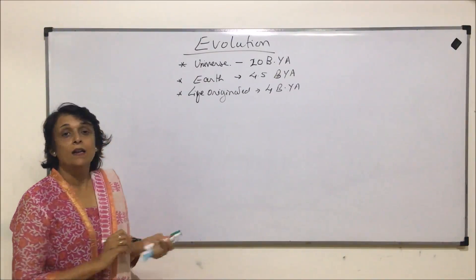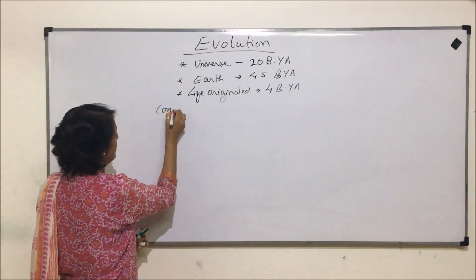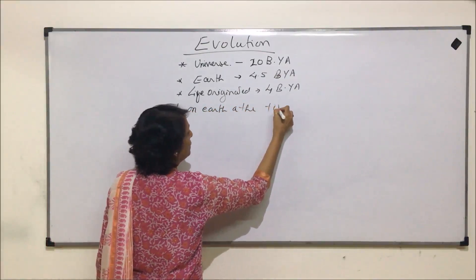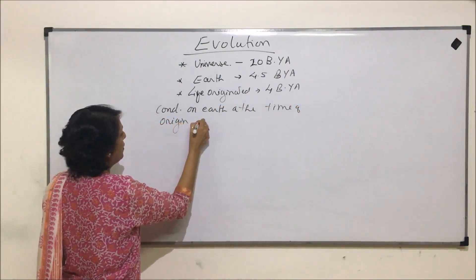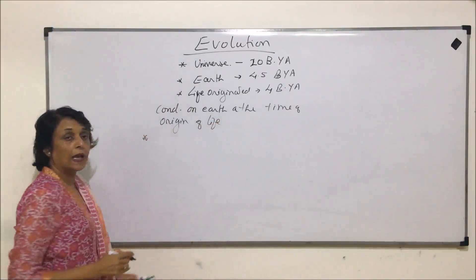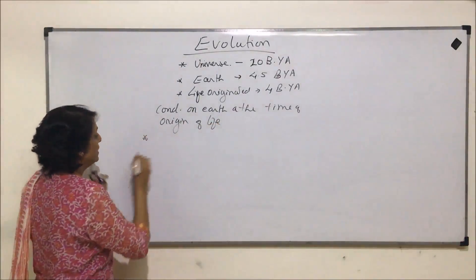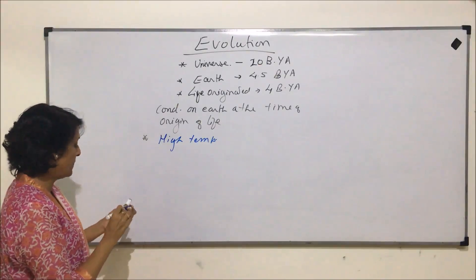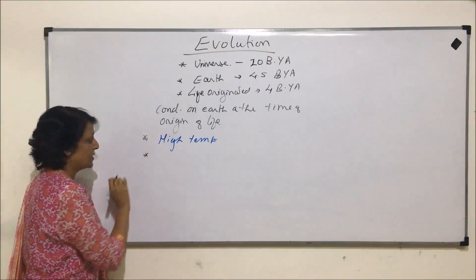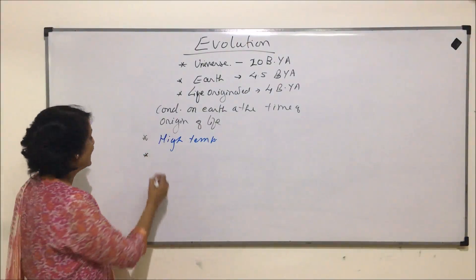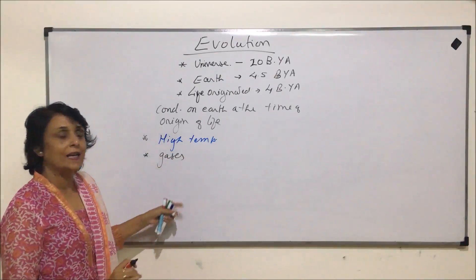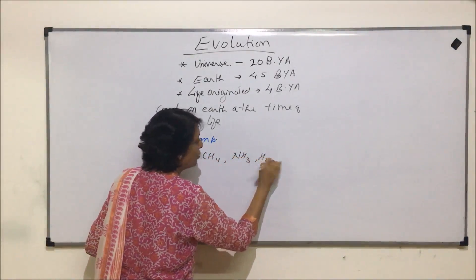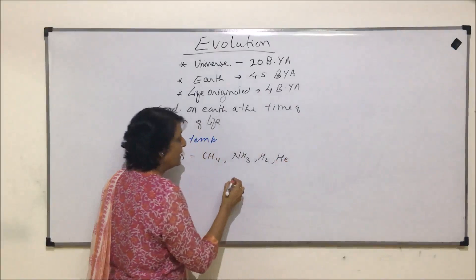Various techniques were used by scientists like carbon dating and many more advanced techniques to estimate this time. Now when life originated on earth, what were the conditions? First thing, the temperature was very high. The lighter elements were present in the form of gases, so there were gases like methane, ammonia, hydrogen, helium, and water vapor.